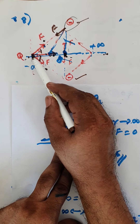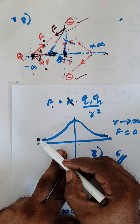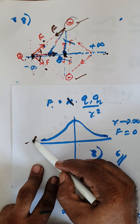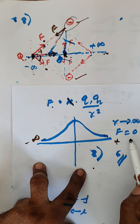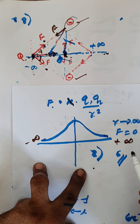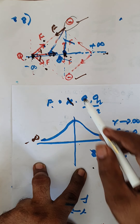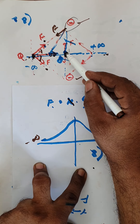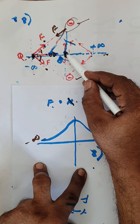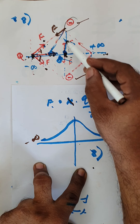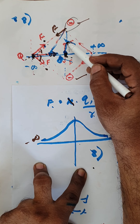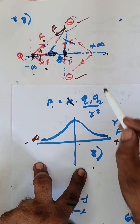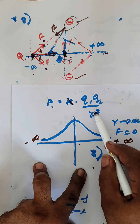At minus infinity, force becomes zero. At plus infinity, force becomes zero. But when Q is at the origin, force takes the maximum value, because that is where the distance takes its minimum value.